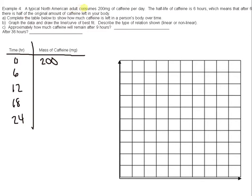Table 4 says a typical North American adult consumes 200 milligrams of caffeine per day. So that's in your coffee, your tea, your chocolate. And the half-life of caffeine is six hours. So what half-life means is that after every six hours, half of the previous amount is left over.